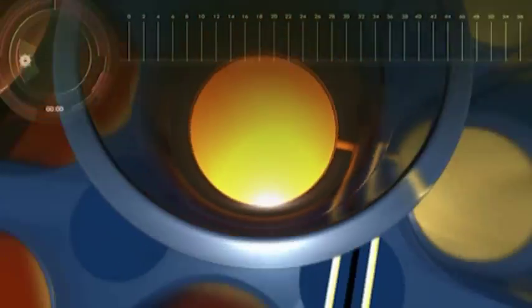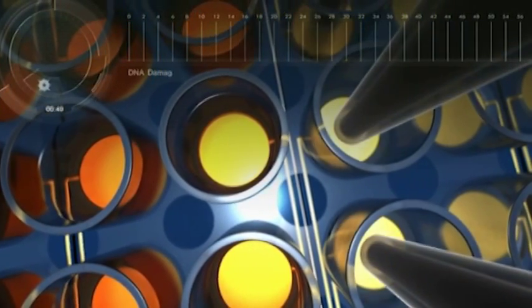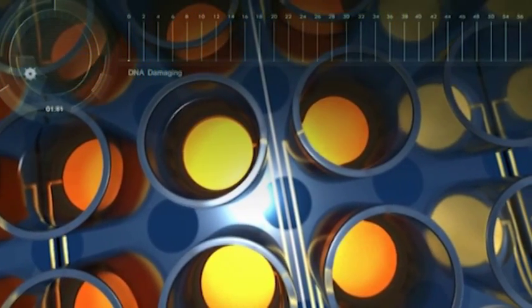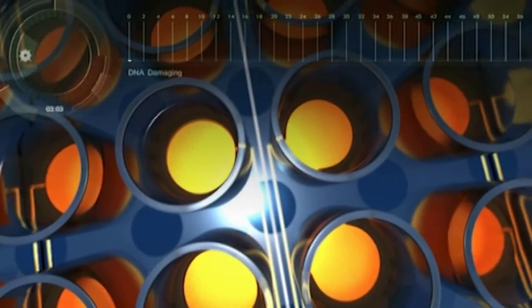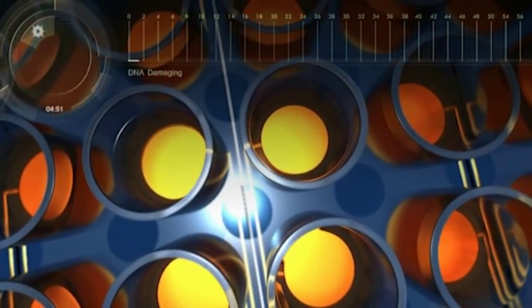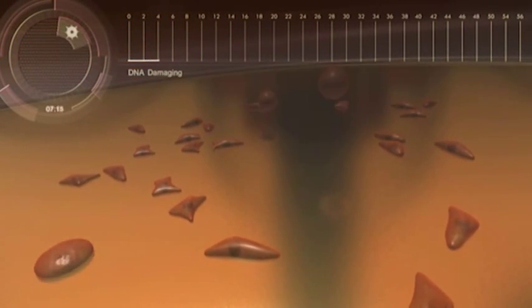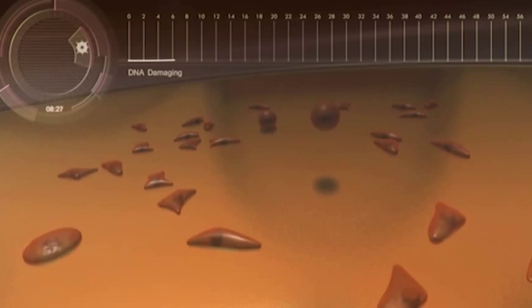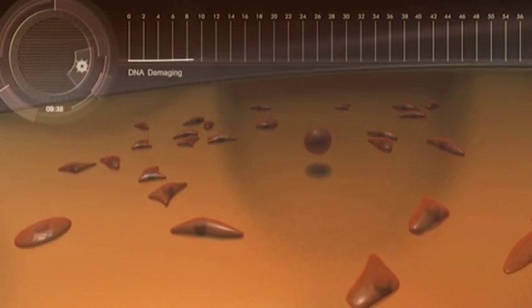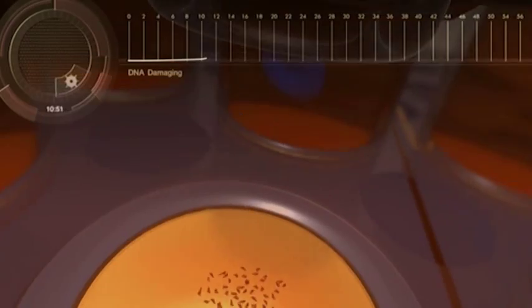When the wells contain only media, a baseline impedance can be read, as determined by the ionic conditions of the media. Cells are added to the plate. They settle onto the surface of the microelectrodes and begin to attach and grow. As cells proliferate and the population increases over time, the measured impedance will rise.